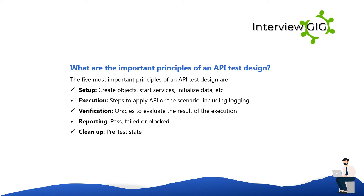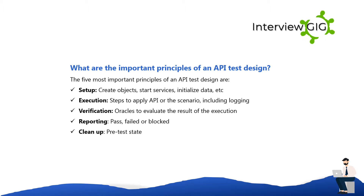What are the important principles of API test design? The five most important principles of API test design are: setup (create objects, start services, initialize data, etc.); execution (steps to apply the API or scenario, including logging and verification); oracles (to evaluate the result of execution); reporting (pass, failed, or blocked); and clean up (restore pre-test state).